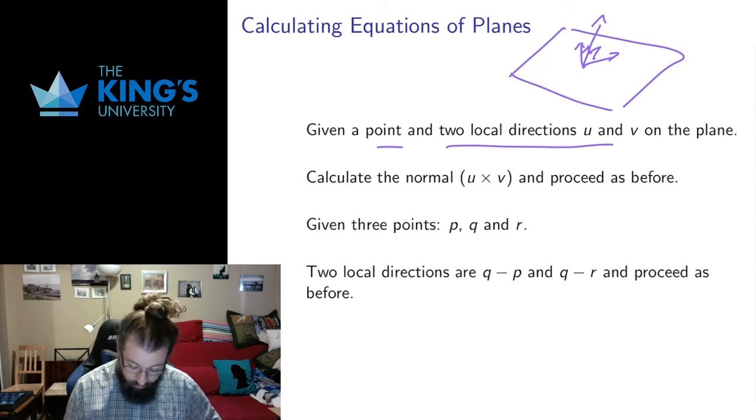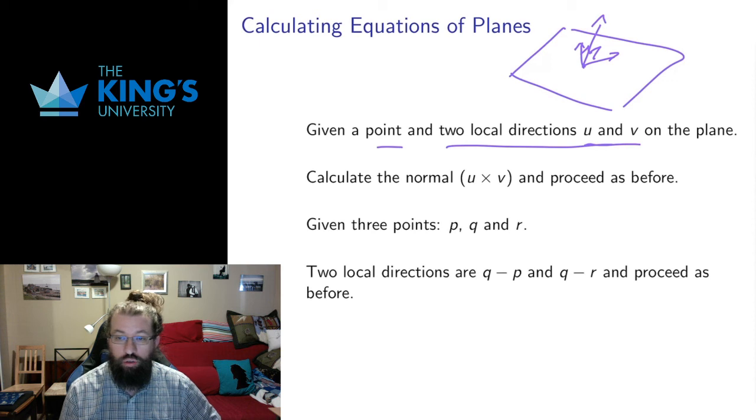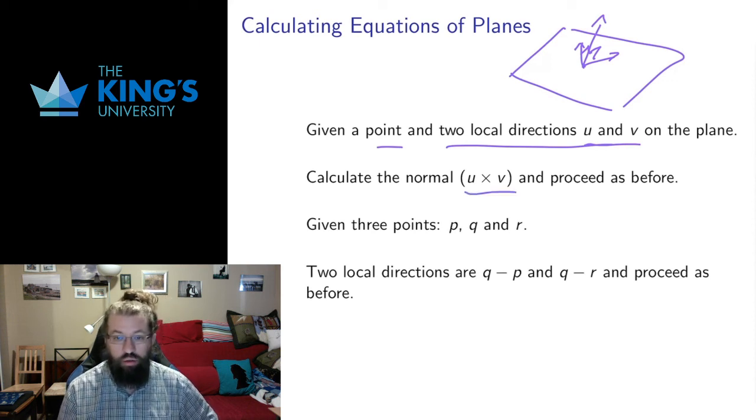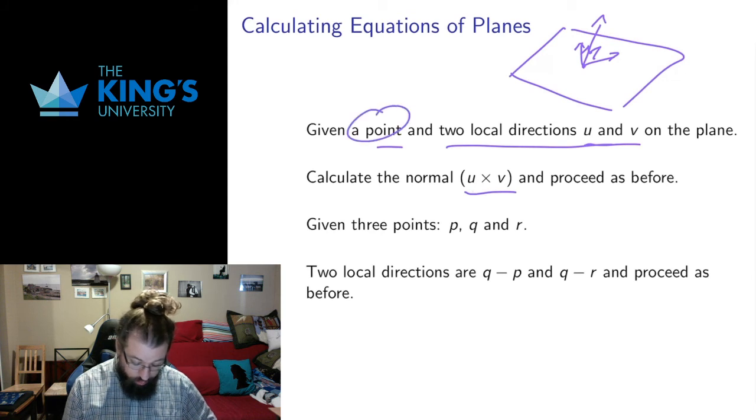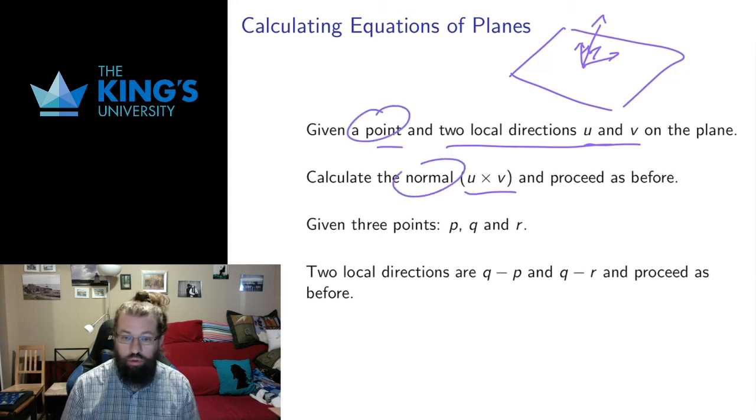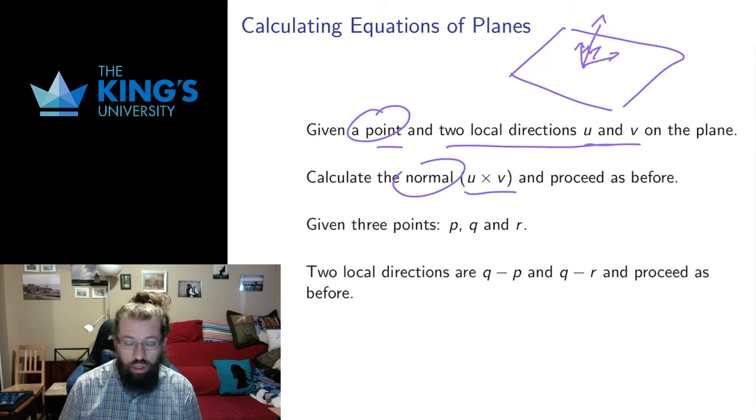So if I have given two local directions, so two vectors u and v which are local directions, I can produce the normal by taking the cross product. Then I have a point and a normal, and I do exactly what was on the previous slide, where I put the normal into the left side of the equation as the coefficients, put the point in, calculate the constant c, write the equation of the plane.